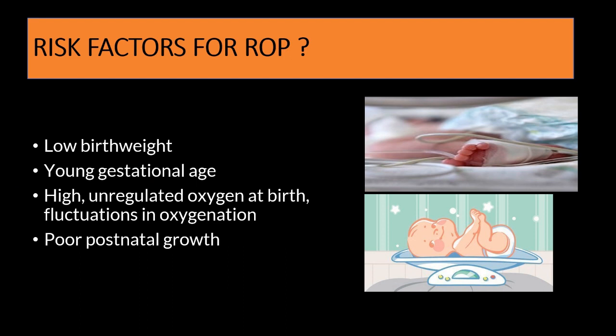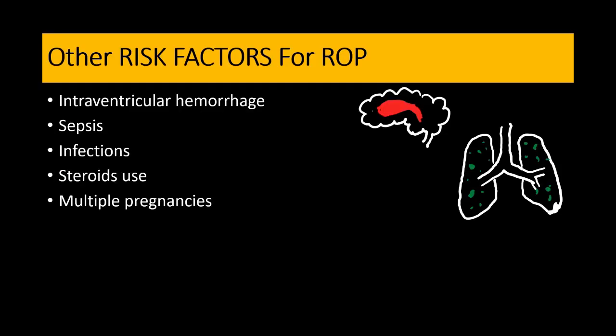The risk factors for development of retinopathy of prematurity include low birth weight, young gestational age, and high unregulated oxygen exposure — sometimes with fluctuations where the baby is placed on oxygen, weaned off, and restarted. Additional risk factors include poor postnatal growth, failure to thrive, intraventricular hemorrhages, sepsis, infections, steroid use, lung disease, and multiple pregnancies such as twin deliveries.